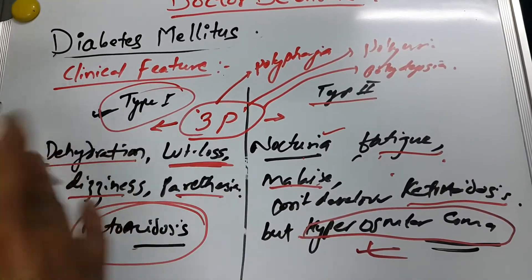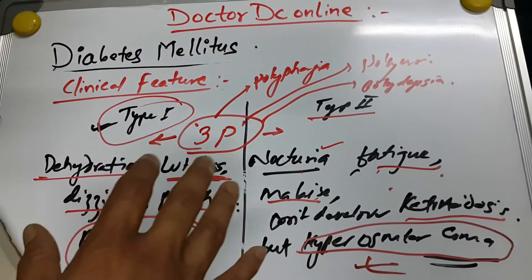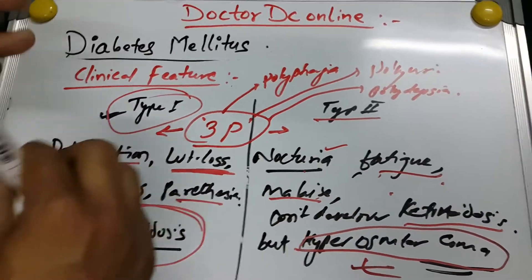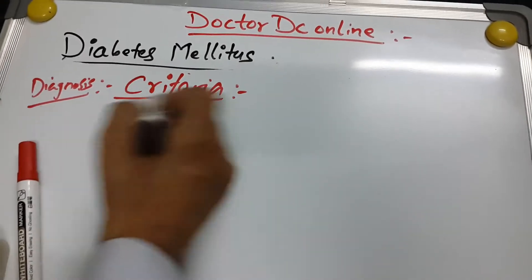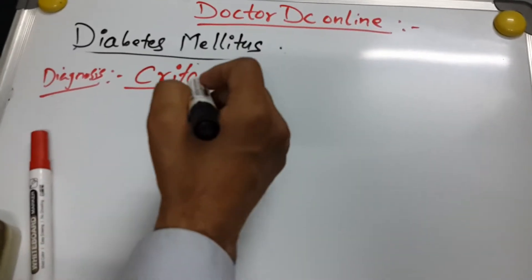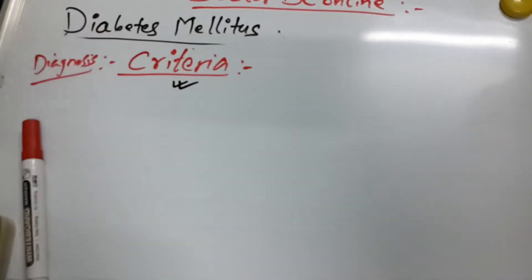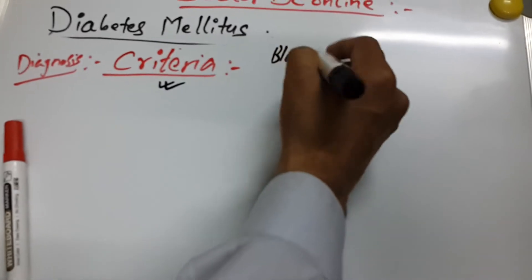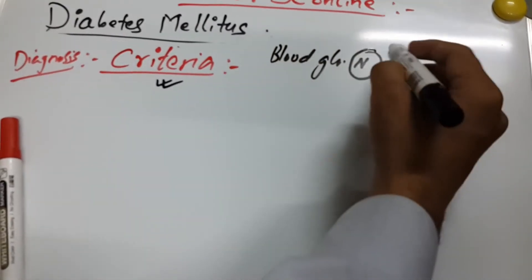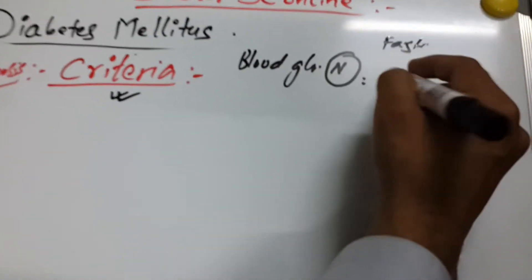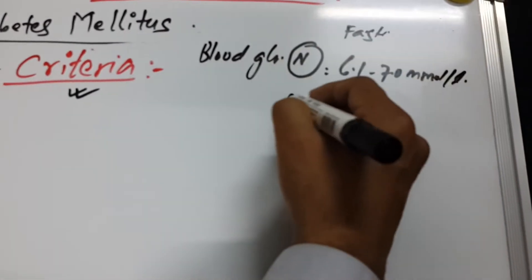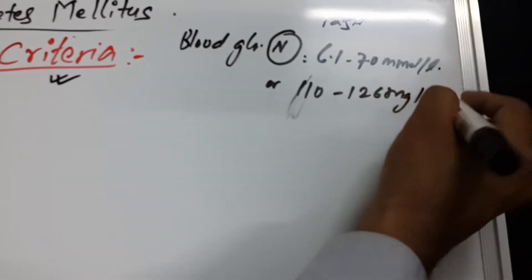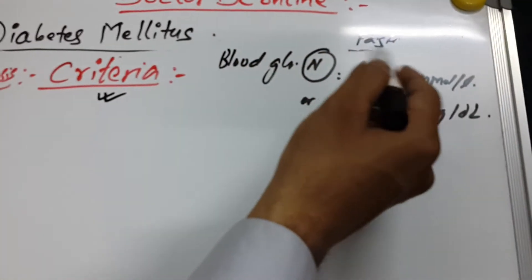These are the main clinical features for Type 1 and Type 2, and you can easily differentiate between them. Now in the next section we will discuss the criteria for how we diagnose diabetes mellitus. Before the criteria, let's note the normal blood glucose level: in the fasting state, normal is 6.1 to 7.0 mmol/L, or 110 to 126 mg/dL.